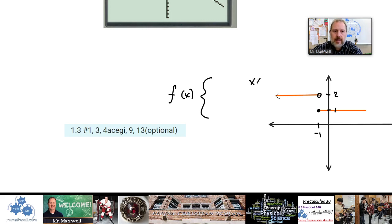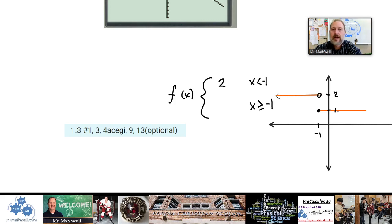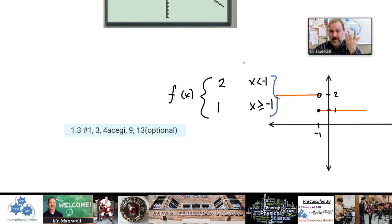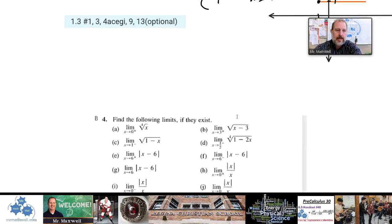So if you were given this graph and asked to write the piecewise function: where x < −1 (the orange part on the left), the graph looks like y = 2, so f(x) = 2 for x < −1. Where x ≥ −1, the graph looks like y = 1, so f(x) = 1 for x ≥ −1. Note that you normally only put braces on one side, as shown in textbooks.